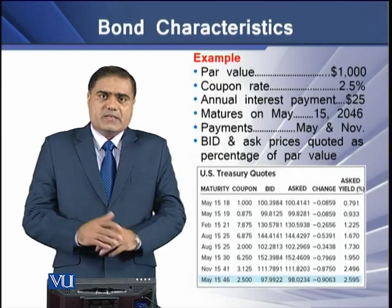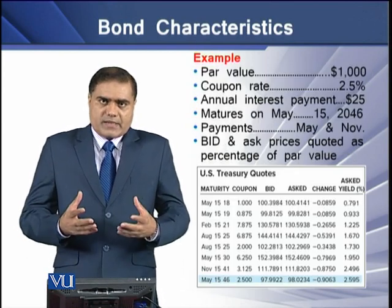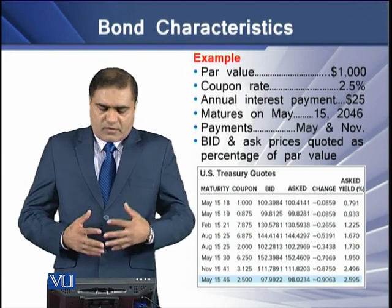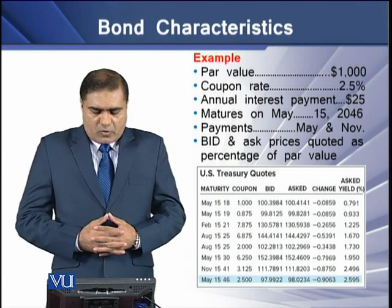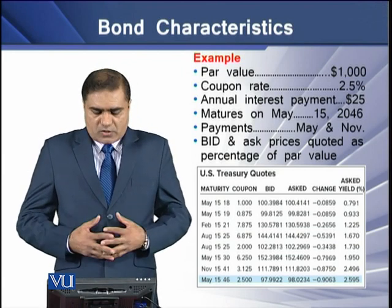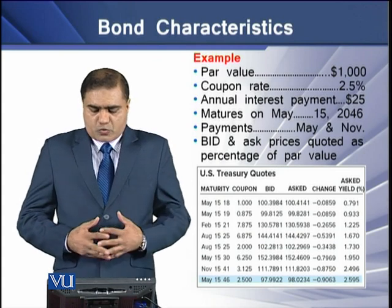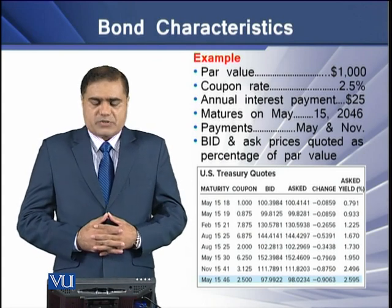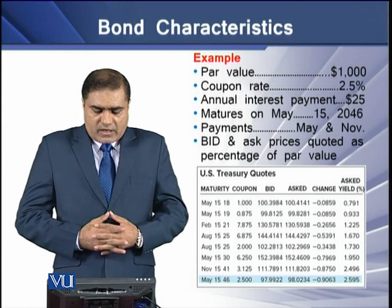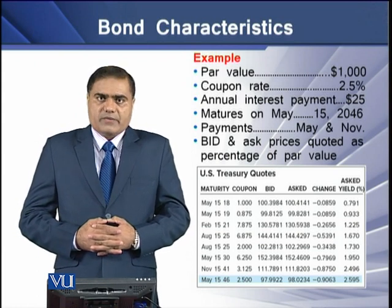Here is an example to understand the basic features of a bond. A bond may have a par value of $1,000. The coupon rate is 2.5% annually, so the annual interest payment is $25.